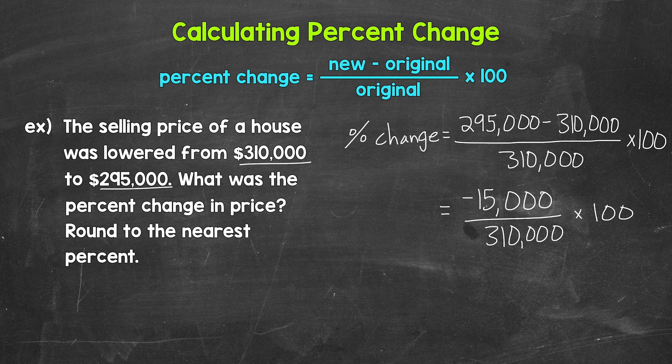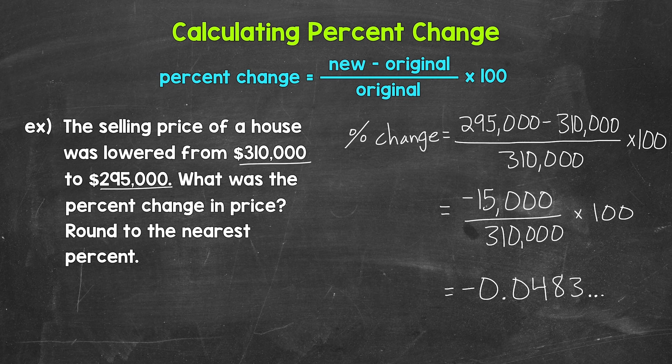So now we divide. We have negative $15,000 divided by $310,000. And that gives us negative 0.0483 and that decimal continues on. It actually ends up repeating. So let's stop there.